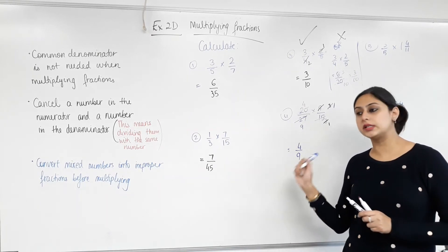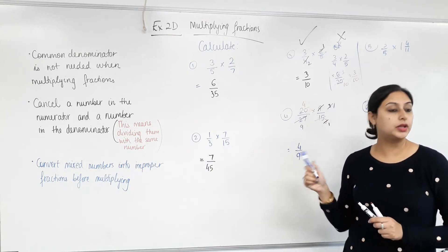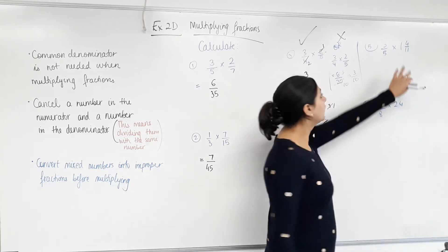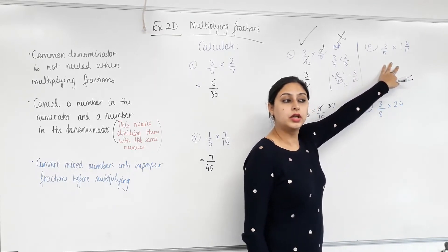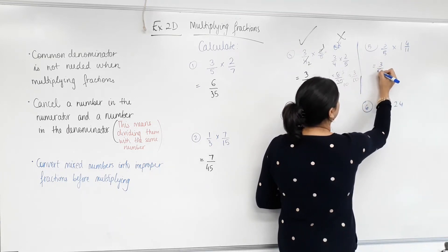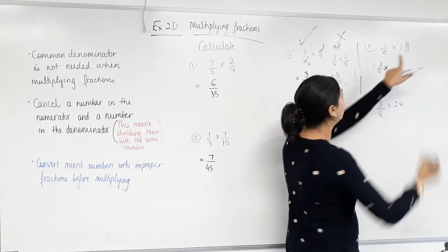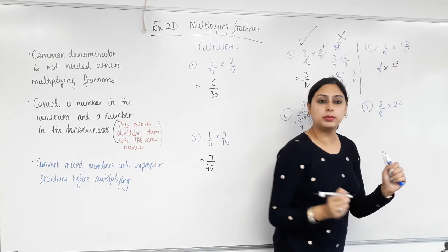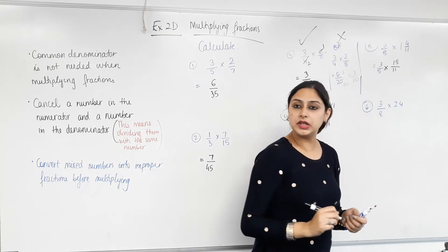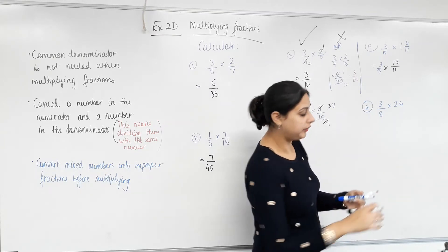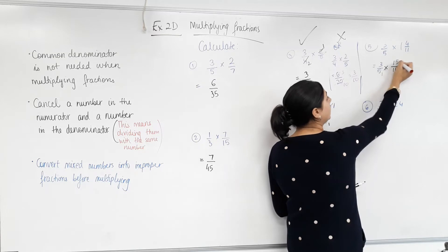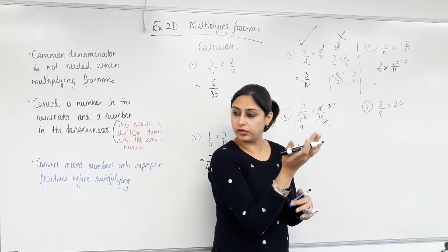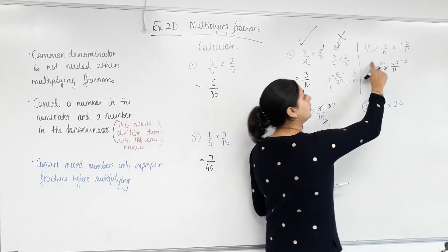You must try and simplify first, not at the end — it works for little numbers but not for bigger numbers. The next one has a mixed numeral, so we convert it into an improper fraction: one times eleven plus four gives us fifteen, and the denominator stays the same. Five and fifteen are both divisible by five: five divided by five is one, fifteen divided by five is three. Any more cancellations? No. So multiply the numerators together and multiply the denominators together.